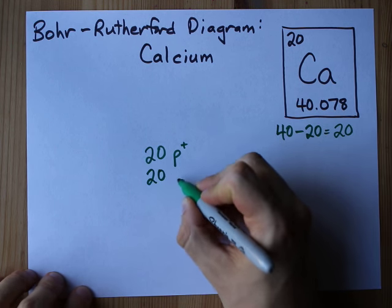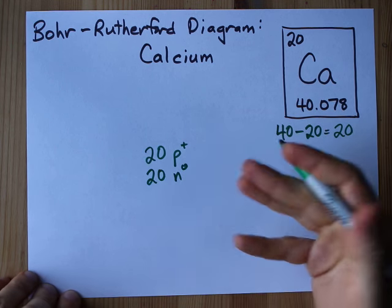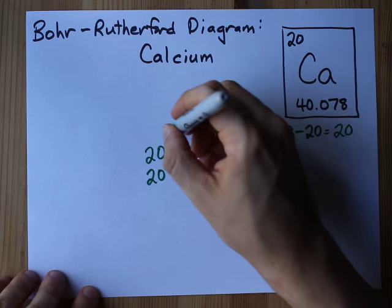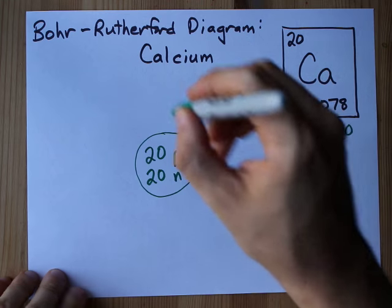It's just a coincidence that these are the same number here, that's not always the case. You have to do the subtraction. Here we are, 20 protons and 20 neutrons in the center.